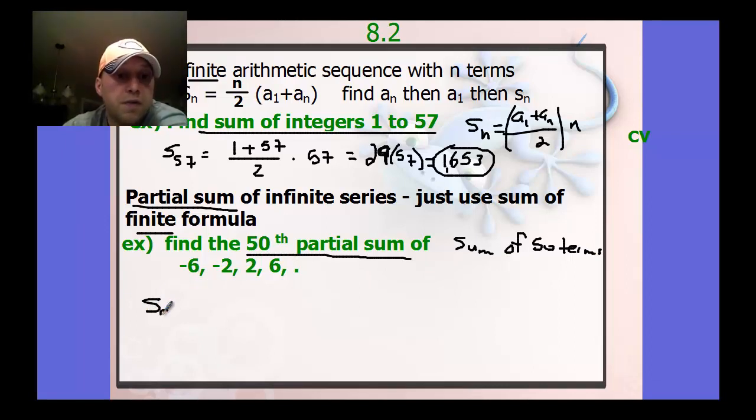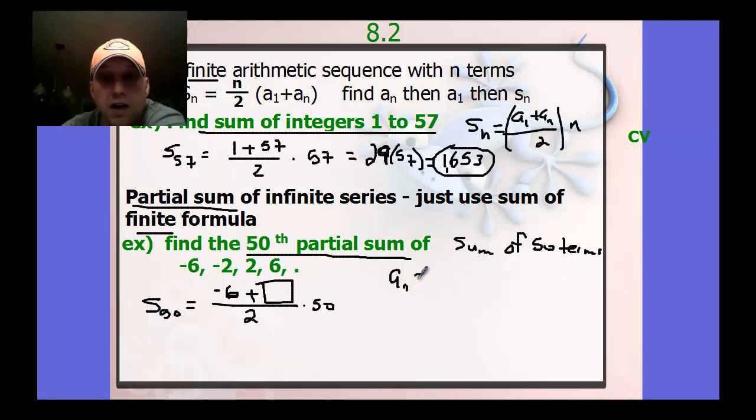So the sum of 50 terms here is still going to be the first term, negative 6, plus the last term. Uh-oh. Don't know this last term right here. Divided by 2, times the amount of numbers, 50. So my issue here is finding this right here, which is the last term. So to find that, I need to find an. So then I need to find this formula.